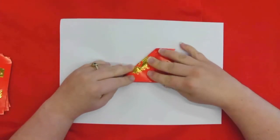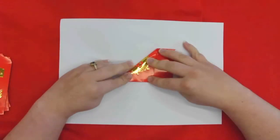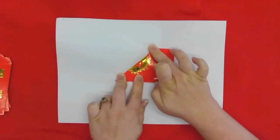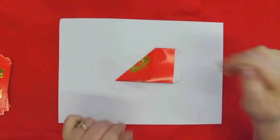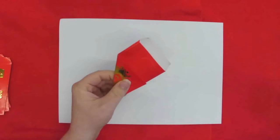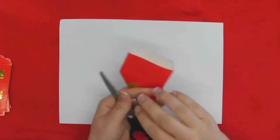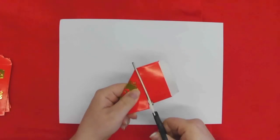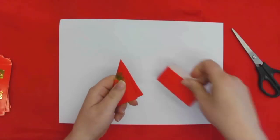And then make sure you crease it well, fold it down well, and then cut off the excess. So you don't need that part anymore. You could create a mini lantern with those pieces though.